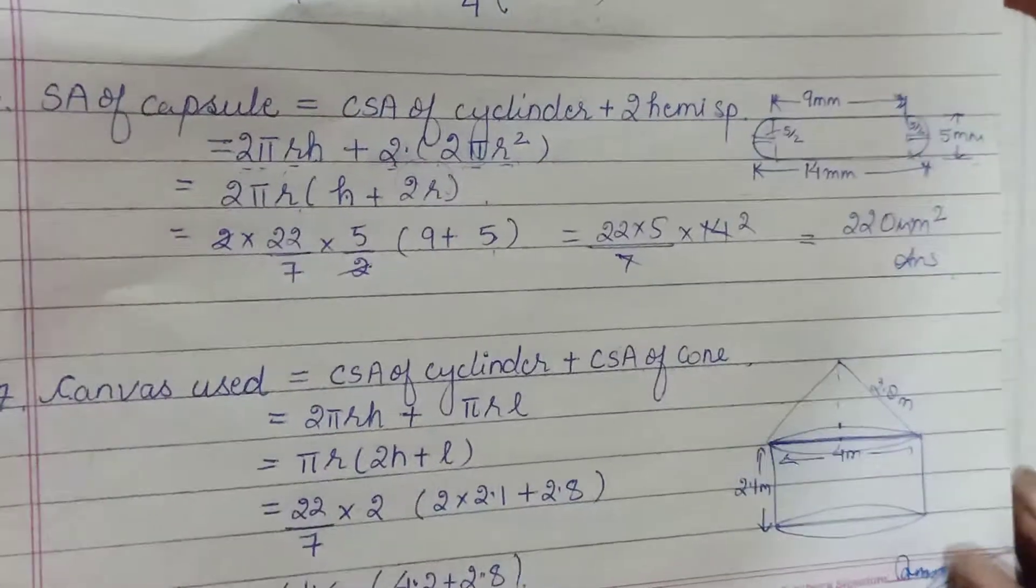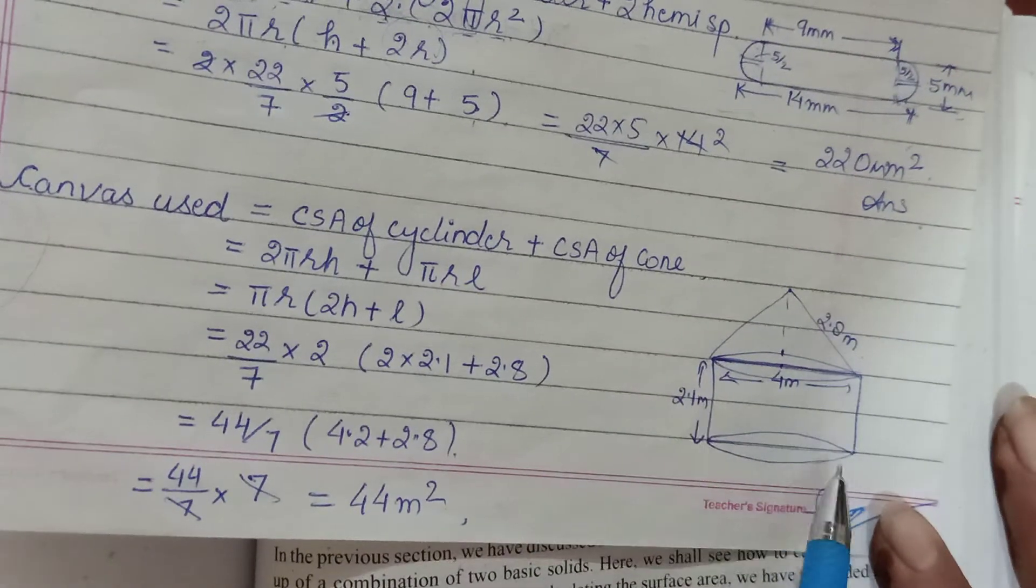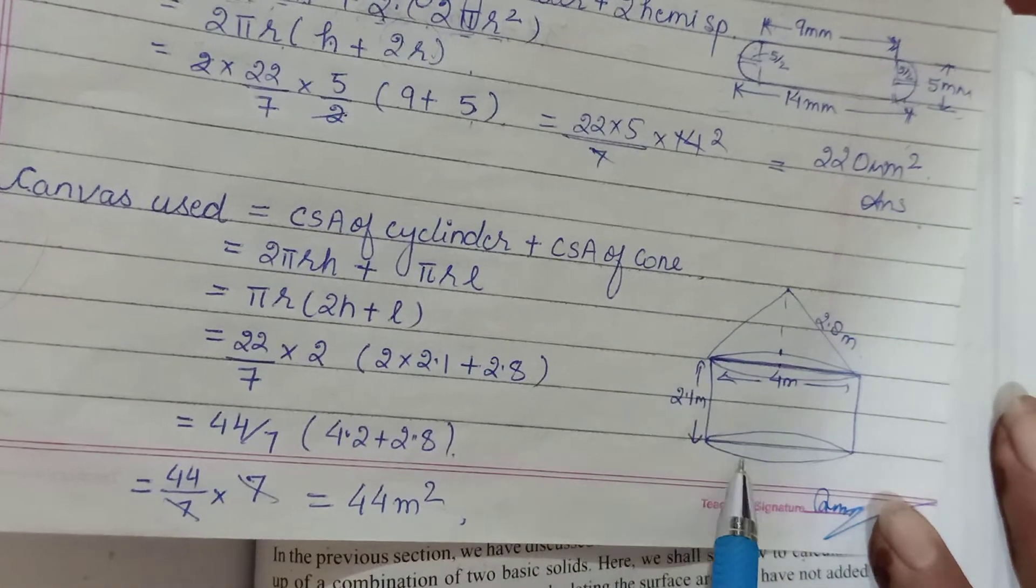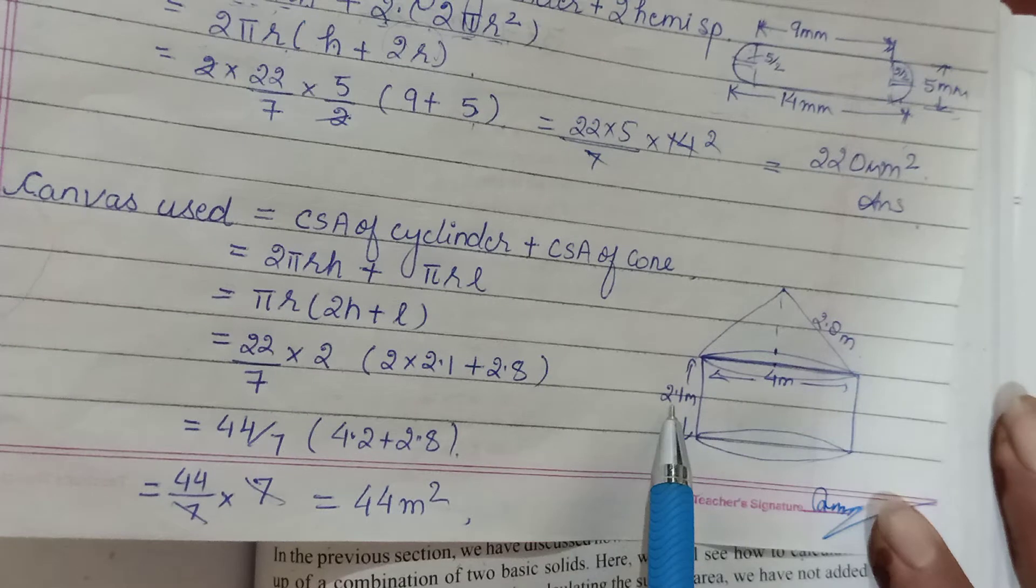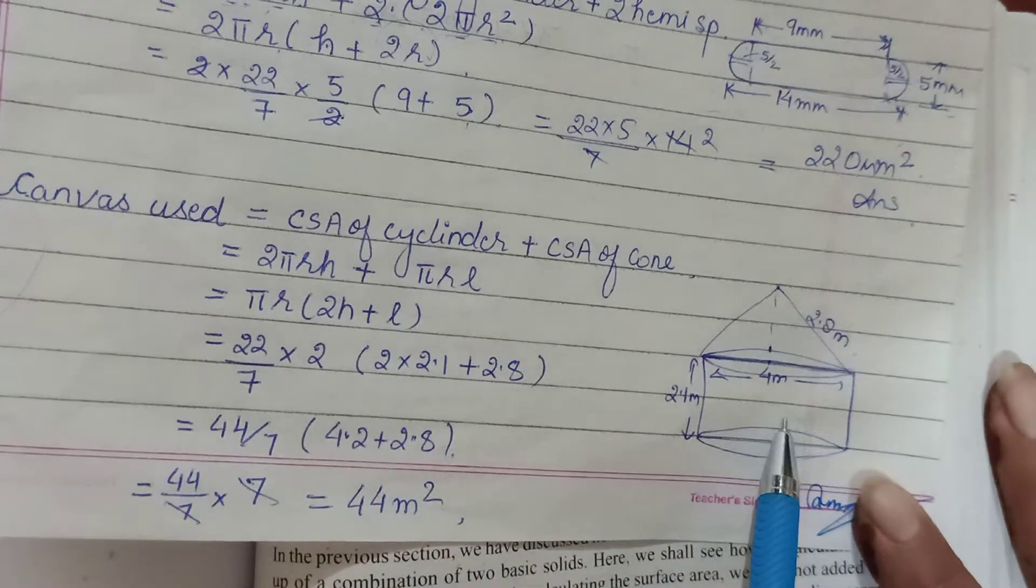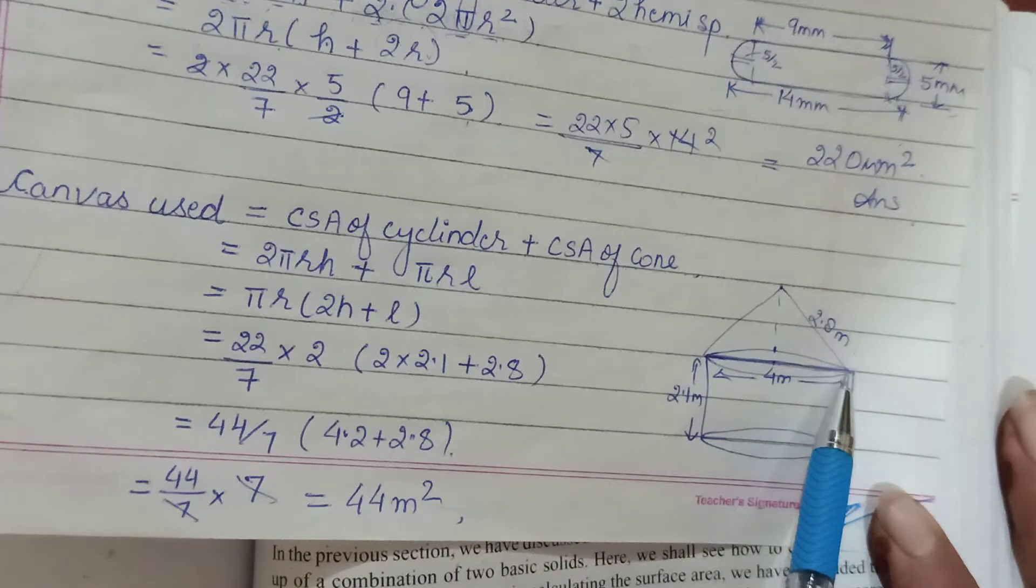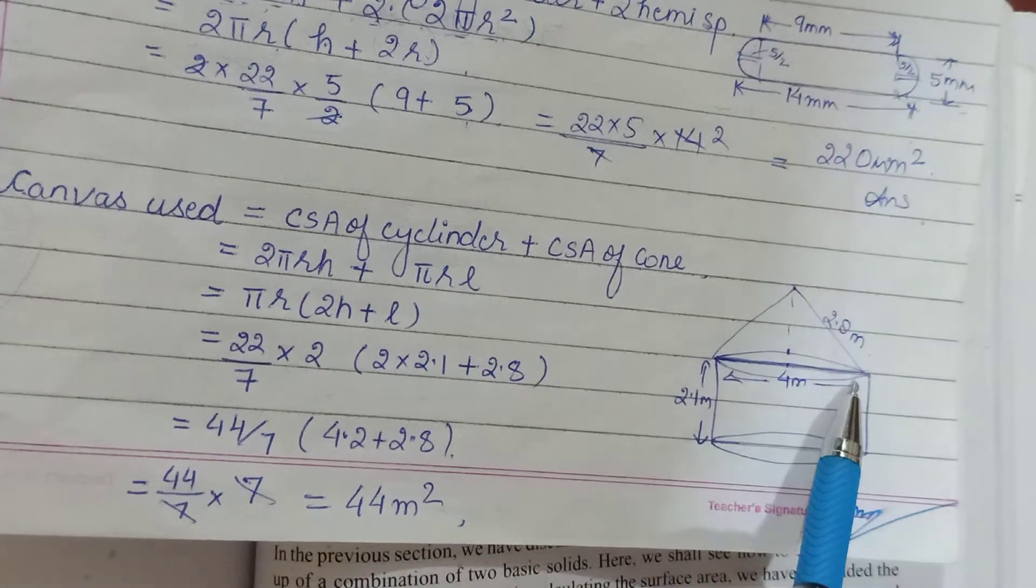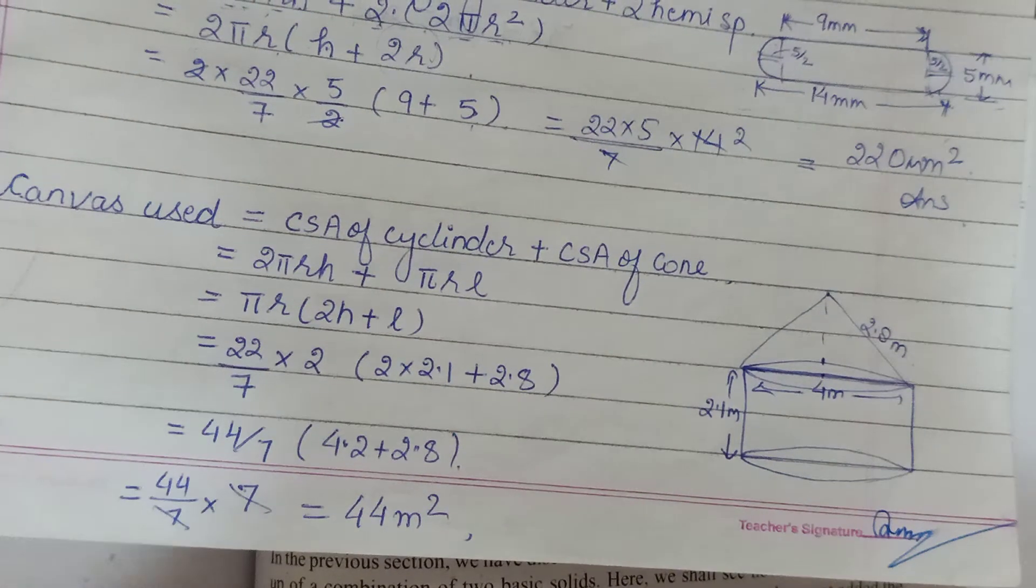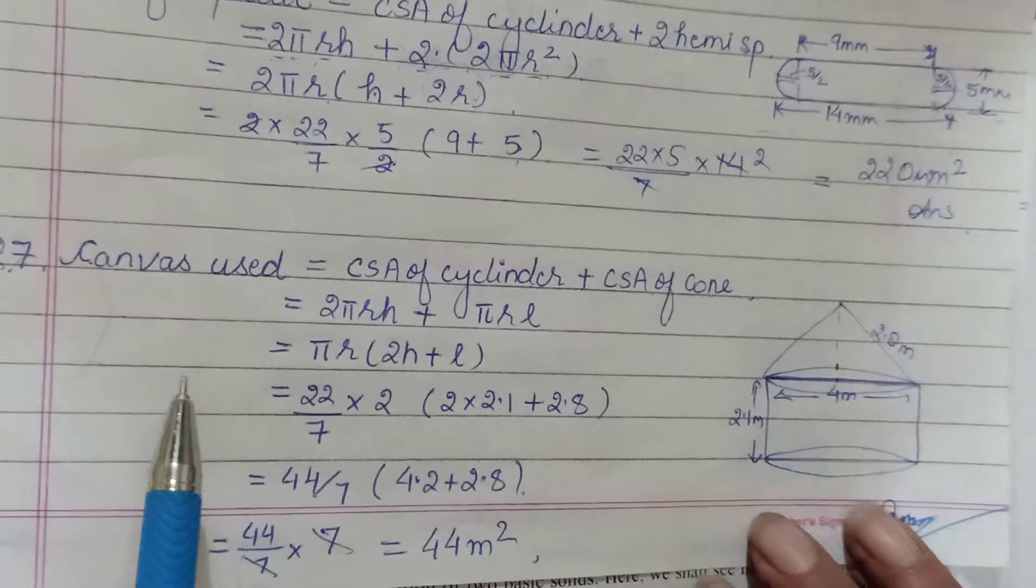So here it goes - simple, only understanding is required. That's your cylindrical portion which is having height 2.1 meter. The diameter of the cone as well as the cylinder is 4, radius would be 2, then half of that. The slant height was given as 2.8 meters. So knowing all those dimensions, now we can continue with our question where we had to find the canvas required.